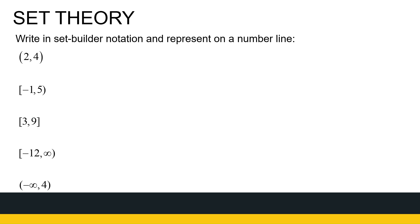Let's look at some interval examples. Intervals are always subsets of real numbers. How do we write them in set builder notation and represent them on a number line? The interval (2, 4) represents all real numbers X where 2 is less than X is less than 4. With real number examples, we're pretty stuck on writing it in set builder form this way.